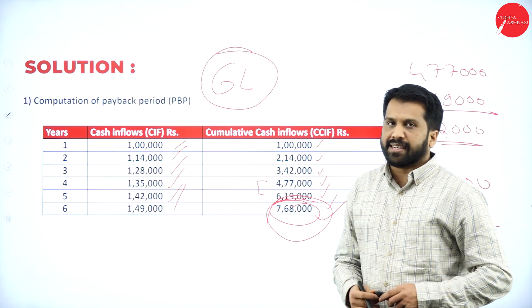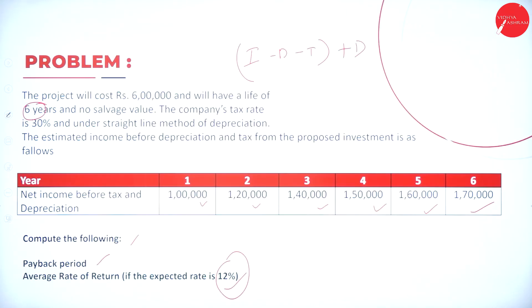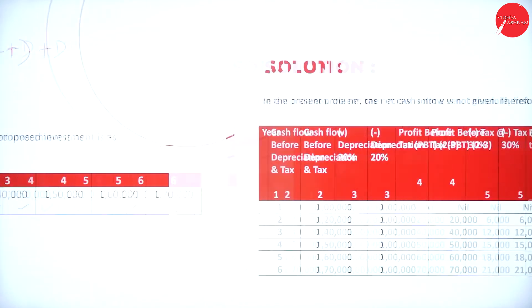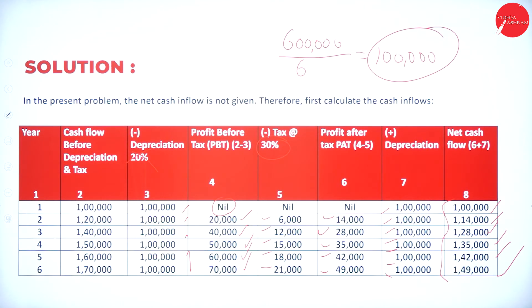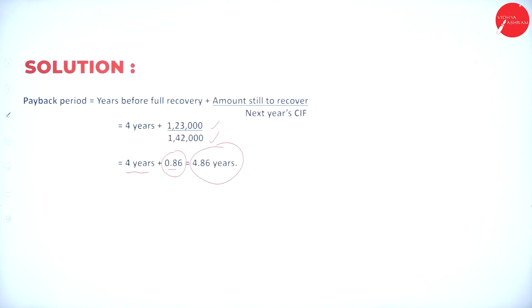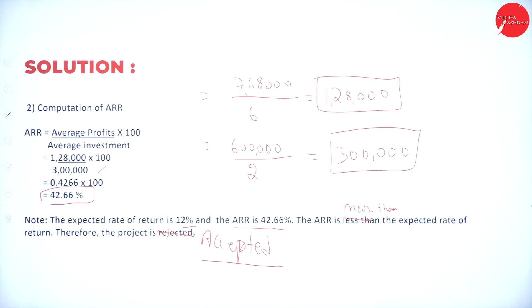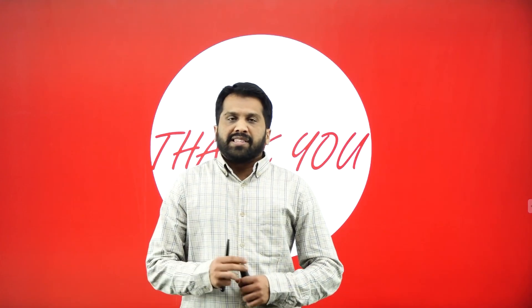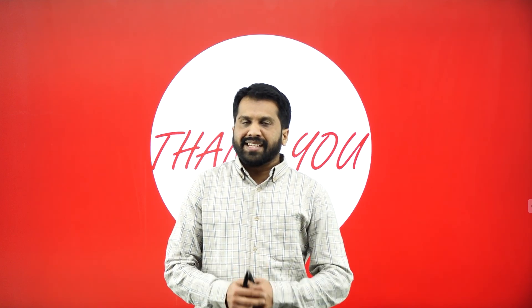Please take a screenshot of the slides. The solution summary: payback period is four point eight six years; accounting rate of return is forty two point six six percent. Normally we should go with discounted value but here we went directly. This is all about today's session — please work out at home. Thank you.